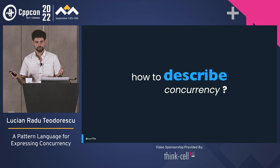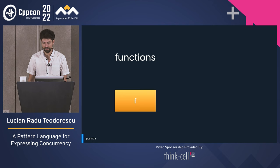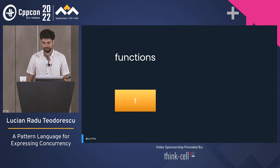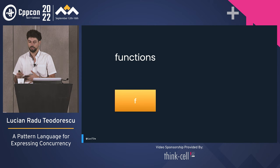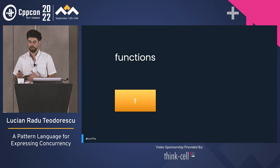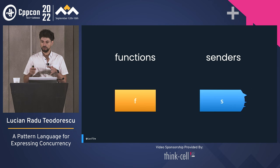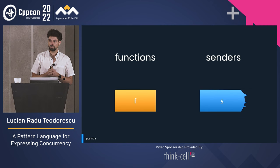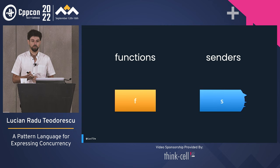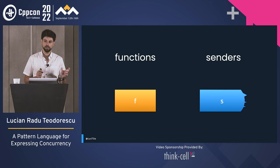Before going into patterns, let's look at the visual language I'm going to use. I'm going to represent functions as boxes. I'll represent senders as boxes with the right-hand side rounded and three spikes — you can guess why there are three. Every time you see a square, that's a function. Every time you see something with a rounded end, that's a sender.